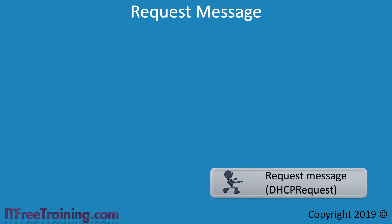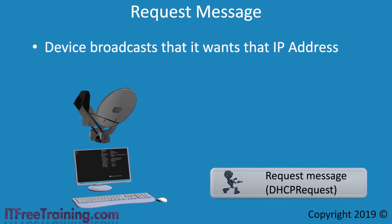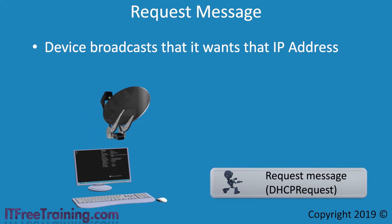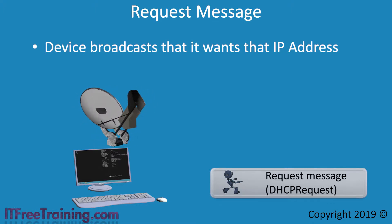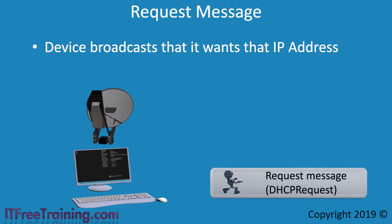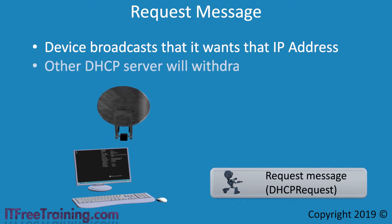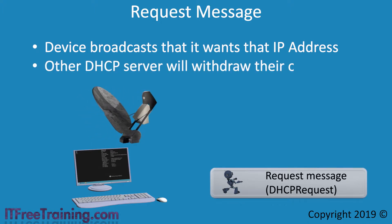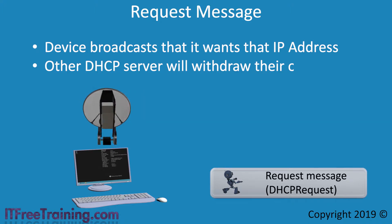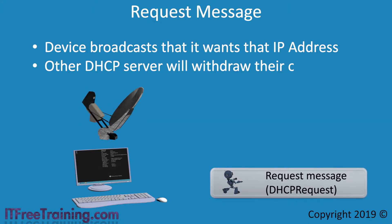The next message type is the Request message. The device will send a broadcast message on the network saying it would like to use the network configuration it received in the Offer message. The advantage of using a broadcast is that other DHCP servers on the network will receive it and withdraw any other offers that have been sent to the device.